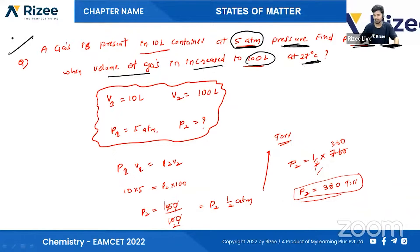The formula: the first pressure is 5 ATM. We need to find the pressure. The volume of 10 liters is equal to 10 liters. How did it increase to 100 liters?